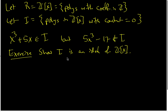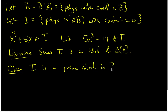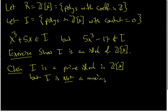So hopefully you've done that. My claim is this: I is a prime ideal in Z[X], but I is not a maximal ideal in Z[X]. So we have to show that I is prime, and we also have to find an ideal that contains I as a proper subset that's not the full ring.